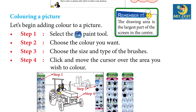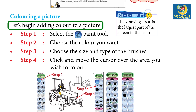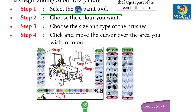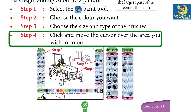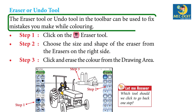Remember it! The drawing area is the largest part of the screen, in the center. Coloring a picture — let's begin adding color to a picture. Step 1: Select the paint tool. Step 2: Choose the color you want. Step 3: Choose the size and type of the brush. Step 4: Click and move the cursor over the area you wish to color.